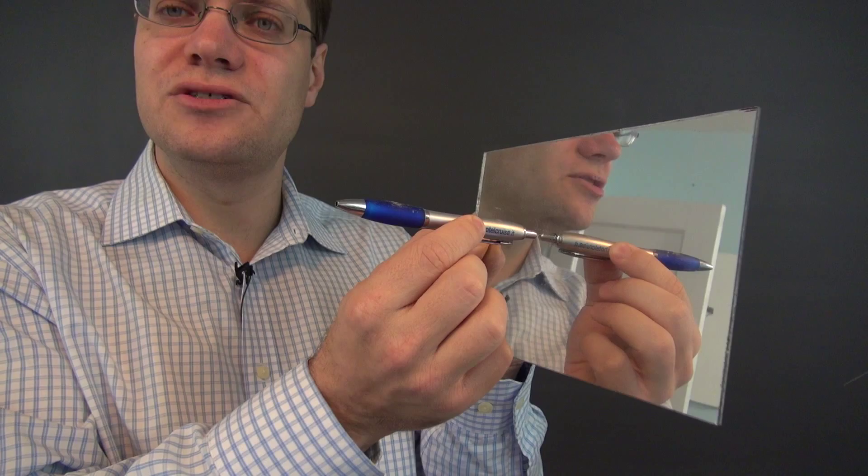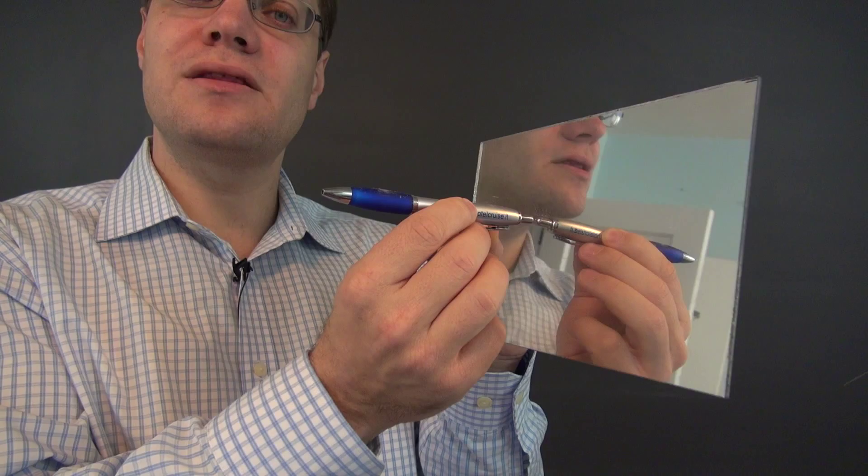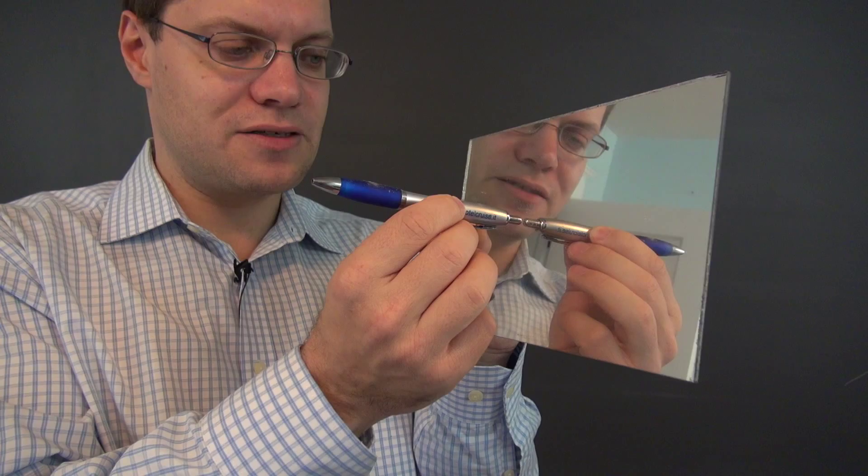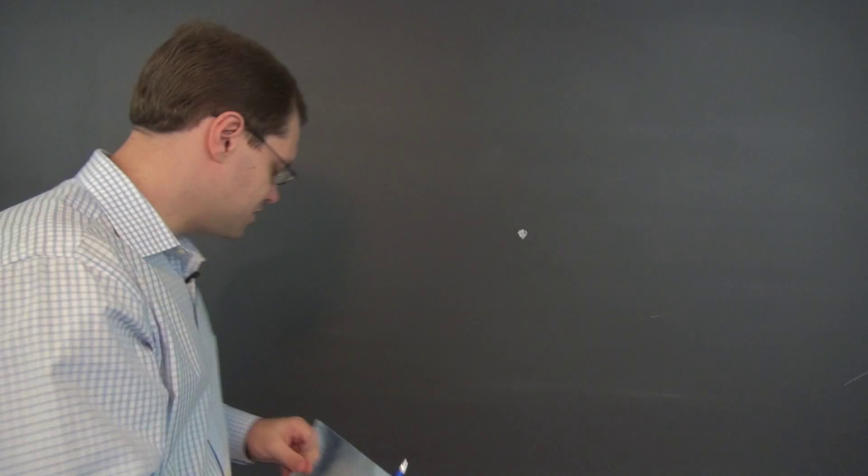Here's the other eigenvector. You can see how its image is parallel to itself but points in the opposite direction, along the same line. So the image is a multiple of the original vector, and that multiple is negative 1. We have discovered two eigenvalues: 1 and negative 1.